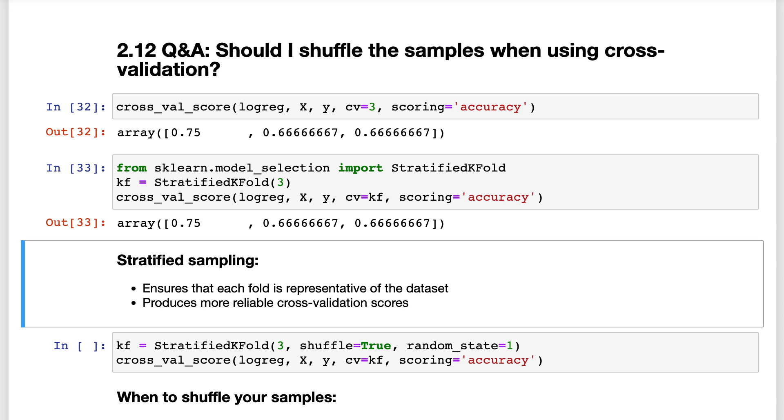Another good thing to know about StratifiedKFold is that by default, it does not shuffle the samples before splitting. Thus, there is nothing random about this process, and you will get the same results every time you run cross-validation score.